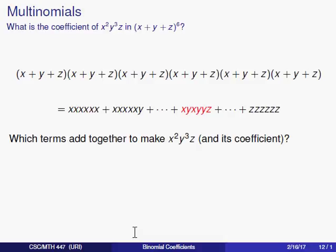Alright, now moving on, you can do the same kind of thing if you raise a multinomial to a power. So a binomial just involves x and y. A multinomial can involve more than two variables, and we can certainly raise these to powers. So in the original problem, we were asked to find the coefficient of x squared y cubed z in x plus y plus z to the sixth power.